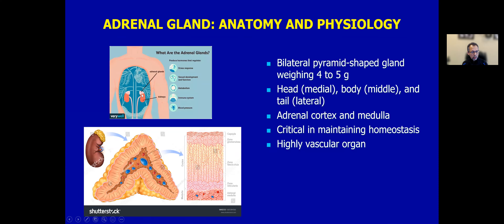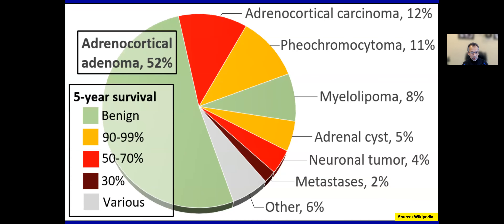Adrenal glands are bilateral pyramidal-shaped glands situated on the upper pole of the kidney. They have three parts: head towards the medial aspect, then body, and then tail. It is composed of an outer layer of adrenal cortical cells made up of three layers, which we will discuss later, and then an inner highly vascular area, which is the adrenal medulla. The adrenal gland is critical in maintaining the body's homeostasis, typically involved in fight-and-flight reactions. It is also a highly vascular organ, and that is the reason it is frequently a site for metastasis.